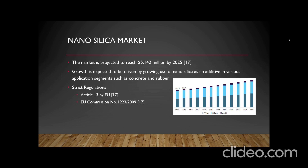The nano silica market has been rising due to demand from the rubber industry and the concrete industry. The global market is expected to reach $5,140 million by 2025. However, strict regulation is expected to limit the use of nano silica particles. Under Article 13 of the European Commission, cosmetic products containing nanomaterials shall be notified six months before the product is launched. Furthermore, according to EU Commission regulation 1223, usage in cosmetics over specified limits may be harmful to the human body. In spite of these strict regulations, the use of nano silica will continue to increase, making efficient and cost-effective production methods ever more important.